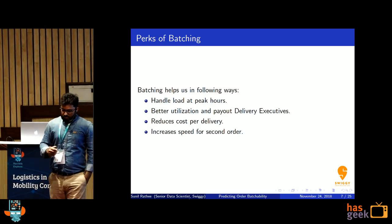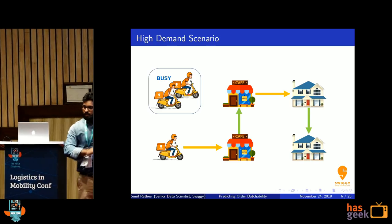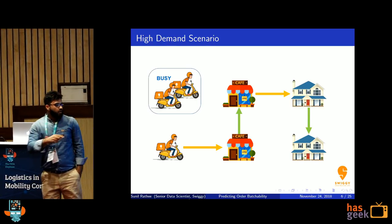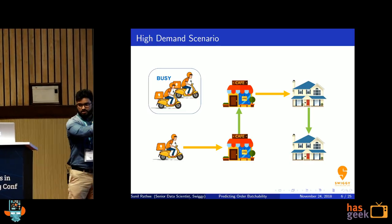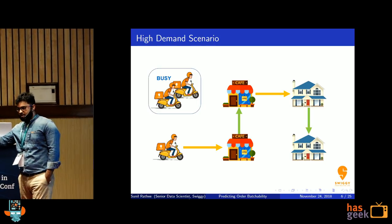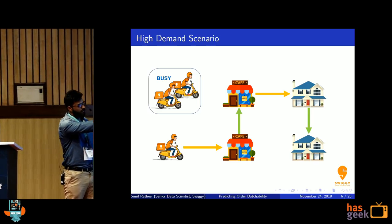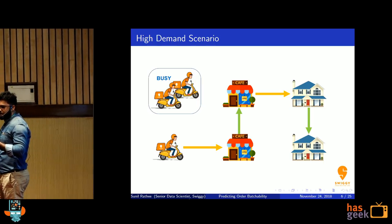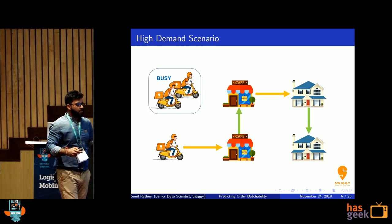Batching also increases speed for the second order. At high load, if we don't do batching, the order will wait at the restaurant until the delivery executive comes back after the previous delivery — which takes a lot of time. If we just batch it, the executive picks it up with only the cost of the preparation time of the second order, which can be small. So overall it increases the speed of the second order.